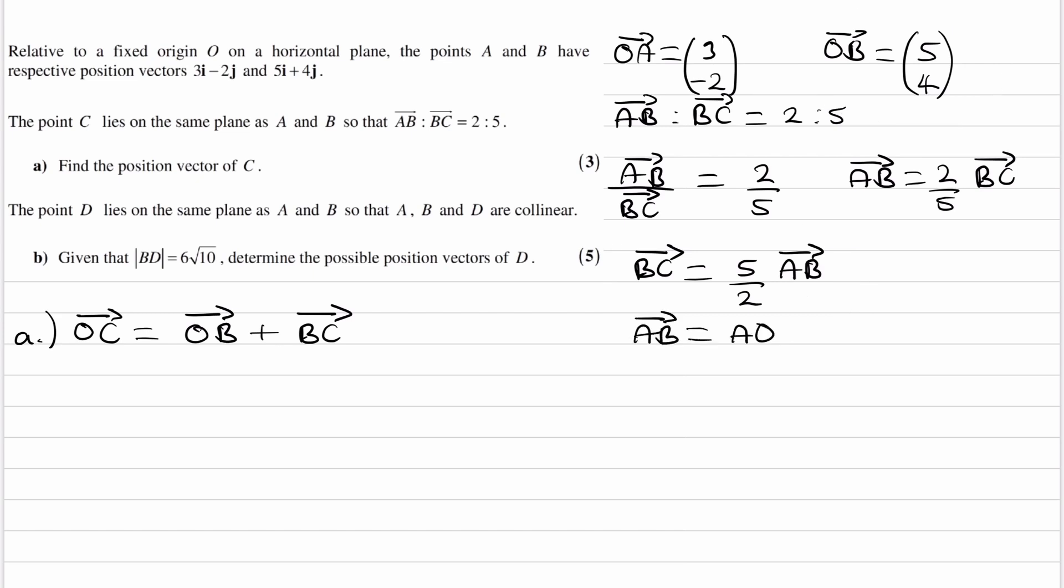AB is AO plus OB, which is then the negative of this, so (-3, 2) plus OB, which is (5, 4). So this will be (2, 6).